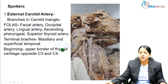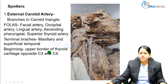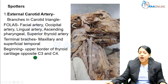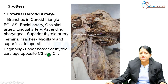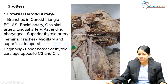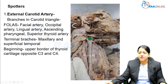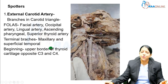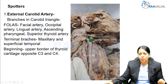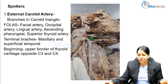The external carotid artery is formed at the upper border of the thyroid cartilage, and posteriorly this corresponds to the disc between the C3 and C4 vertebra. These are key points important for theory answers, and especially for the spotter tag question.